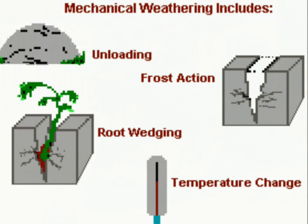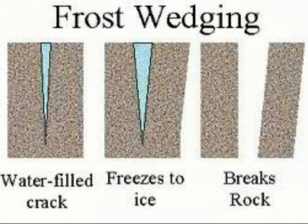First is mechanical weathering, wherein the rock is broken into smaller pieces, retaining its original characteristics. Mechanical weathering has two types: ice wedging or frost wedging, and sheeting or exfoliation.